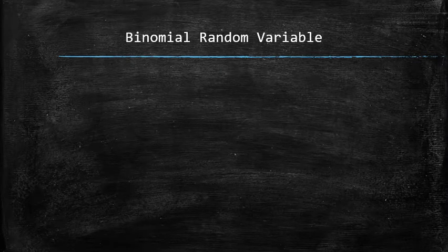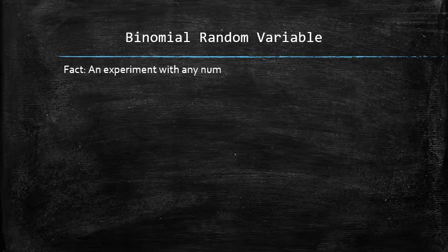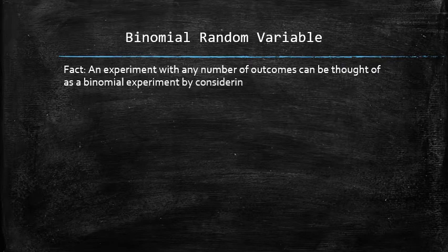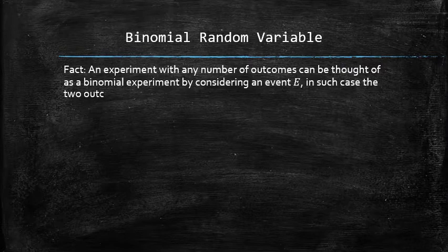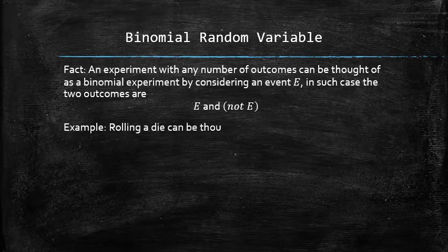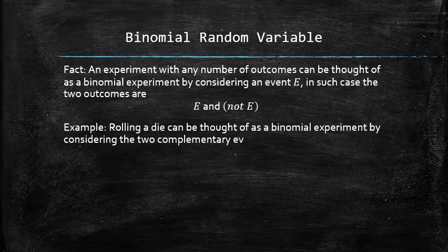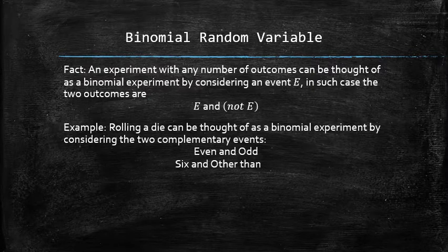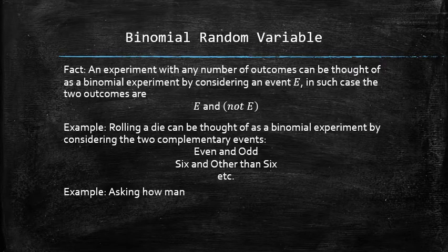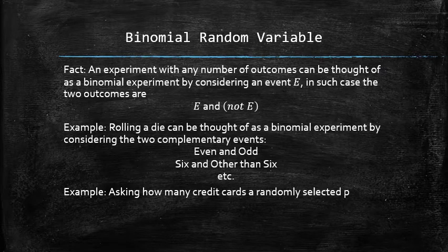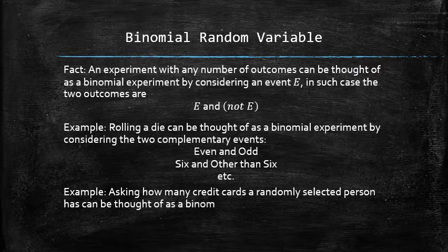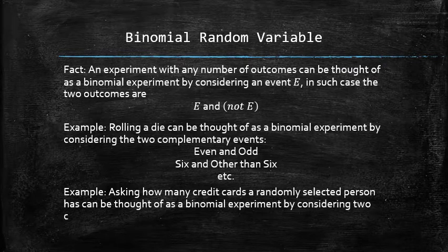Why are binomial experiments so important? Because any experiment with any number of outcomes can be thought of as a binomial experiment by considering an event E. Then, for that experiment, we have two possible outcomes: E and not E. For example, rolling a die can be thought of as a binomial experiment by considering two complementary events, such as even and odd, or 6 and something other than 6. Similarly, asking about credit cards can use complementary events: none and at least one.